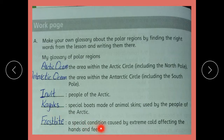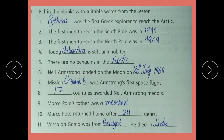Those boards are called kayaks. A special condition caused by extreme cold affecting the hands and feet — بہت زیادہ سردی میں ہاتھوں اور پاؤں کو جو condition آ جاتی ہے وہ frost bite کہلاتی ہے۔ Fill in the blanks: The first Greek explorer to reach the Arctic was Pytheas. The first man to reach the South Pole was in 1911. The first man to reach the North Pole was in 1909.